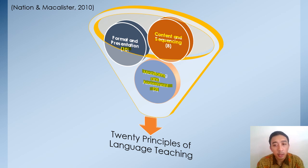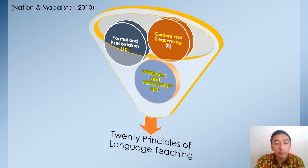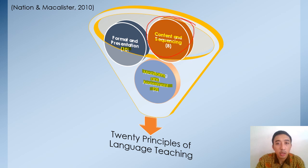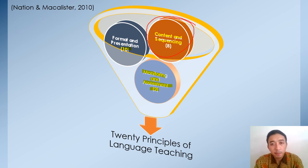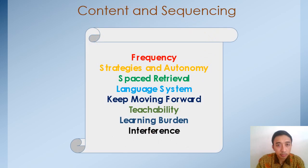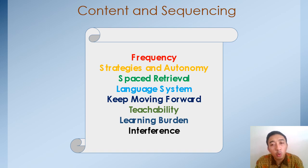There are three categories in principles, just like in the needs analysis we have needs, lacks, and wants from the students. In this meeting we will be focusing on content and sequencing, which covers eight categories. Let's take them one by one. The first one is frequency.